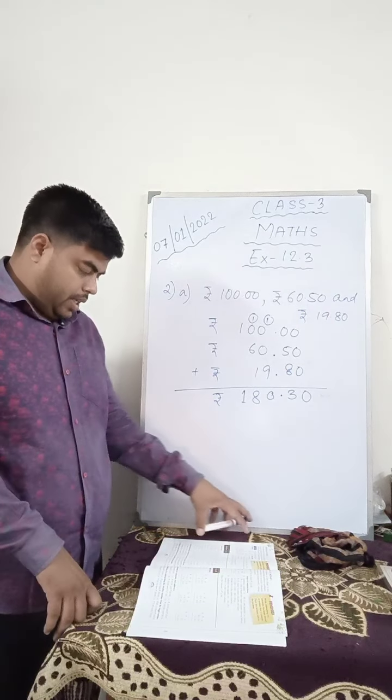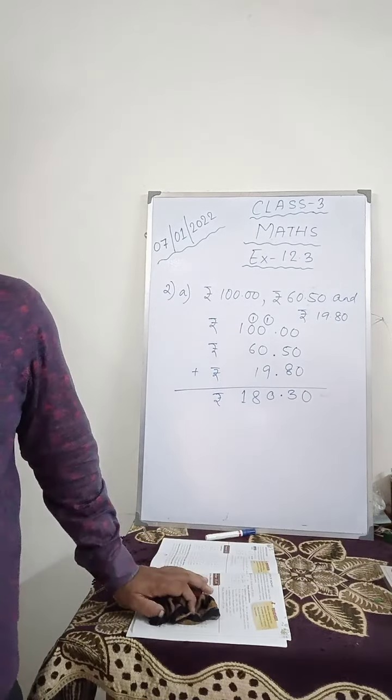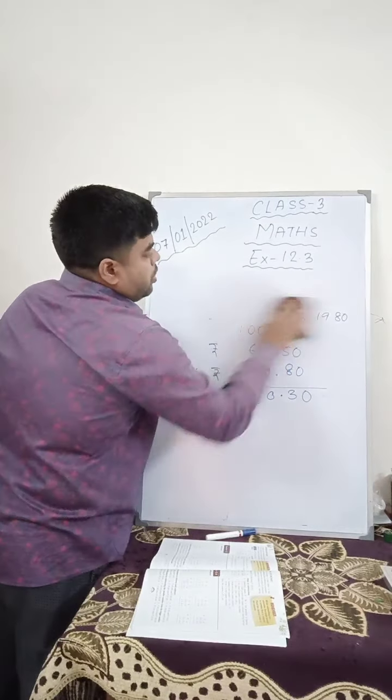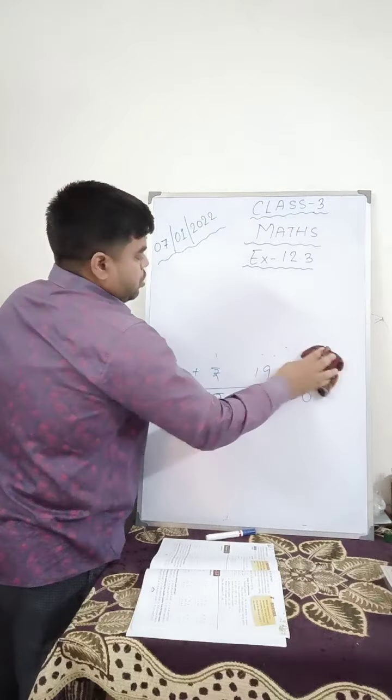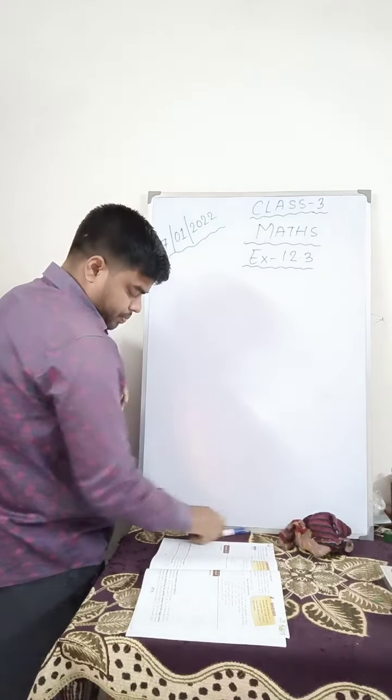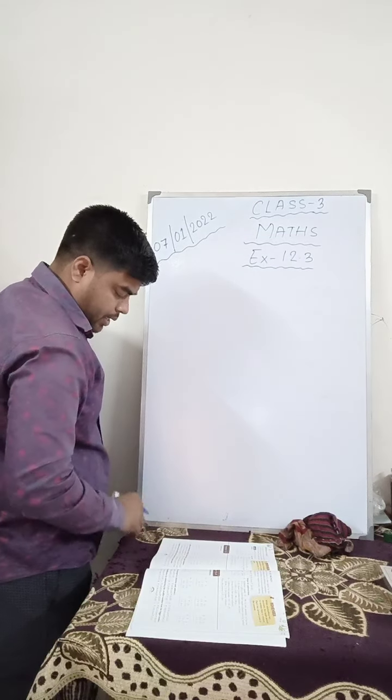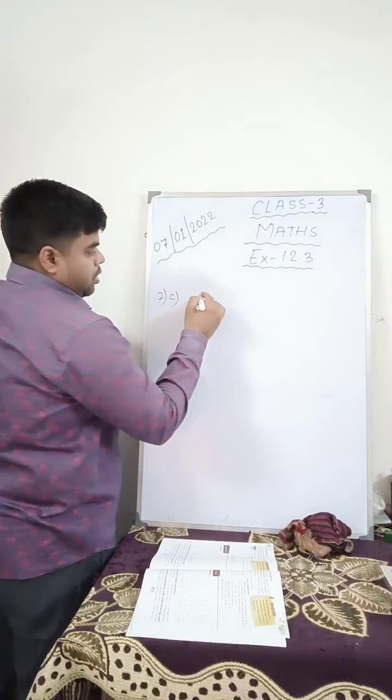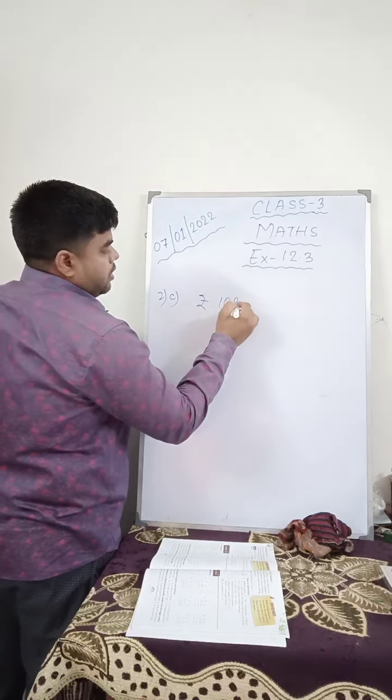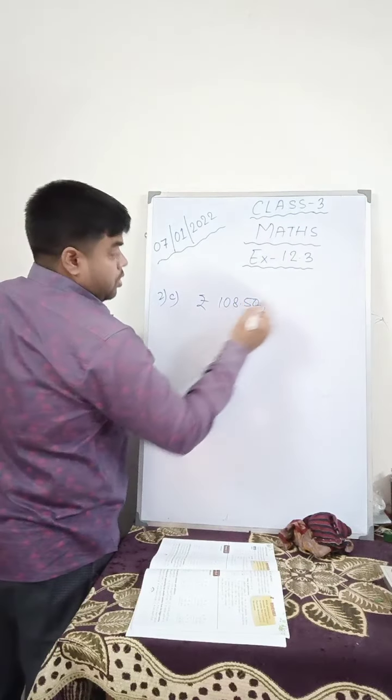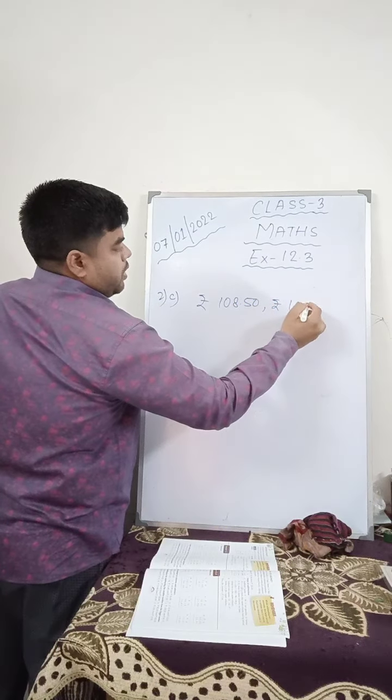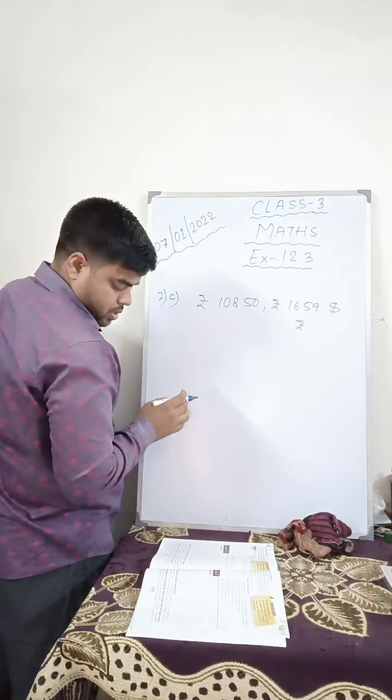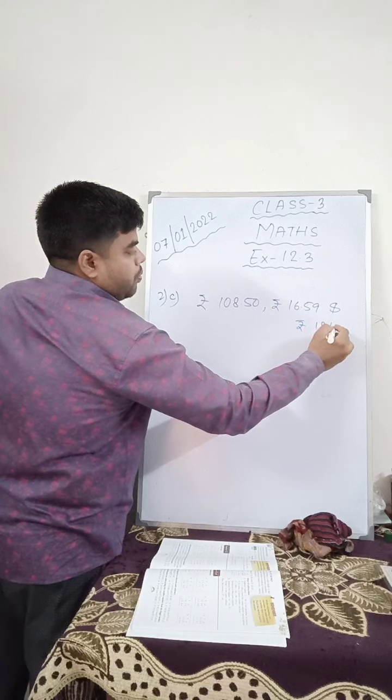Number 3. In question number 3 they have said—okay, let me show you one more from question number 2, this arrangement thing again. Number 2c: rupees 108.50, rupees 16.59, and rupees 121.70.